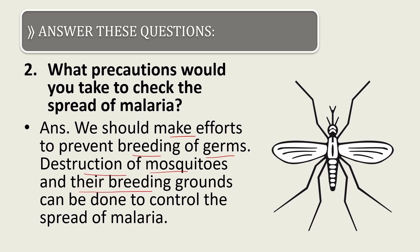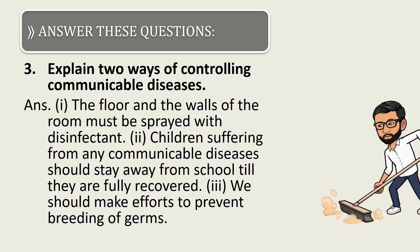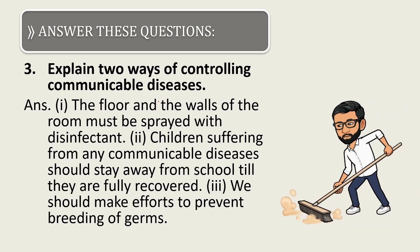Second long answer question: what precautions would you take to check the spread of malaria? We should make efforts to prevent the breeding of mosquitoes. Destruction of mosquitoes and their breeding grounds can be done to control the spread of malaria. Reducing the mosquito population will effectively control malaria.